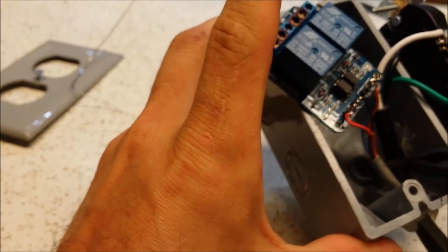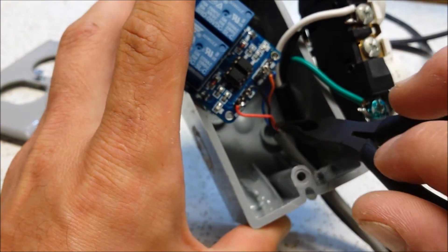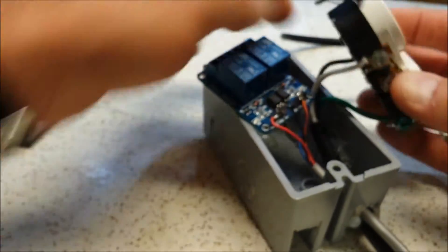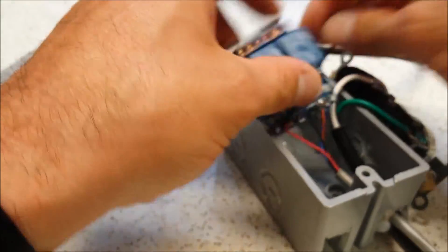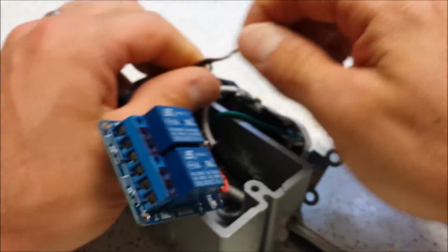You want to make sure that you leave some of the sheathing actually in the box here. So you don't want loose wires hanging out the outside. So now what I'm going to do is take my black wire here, which is the hot coming in, and actually tie it to the two relays.